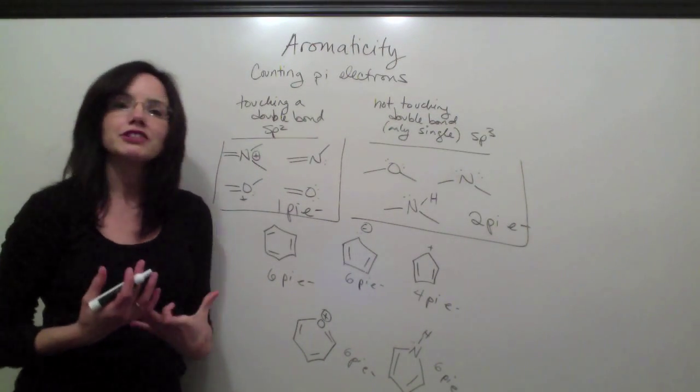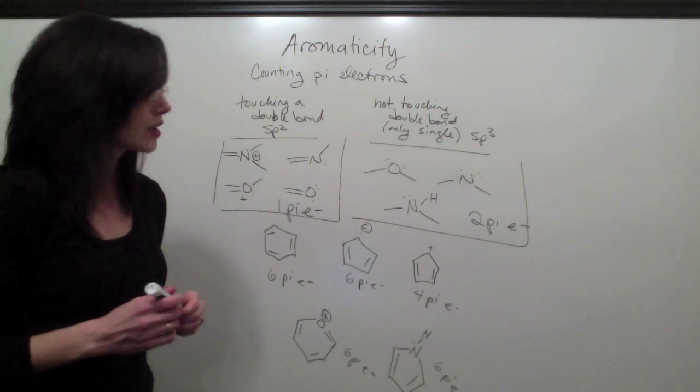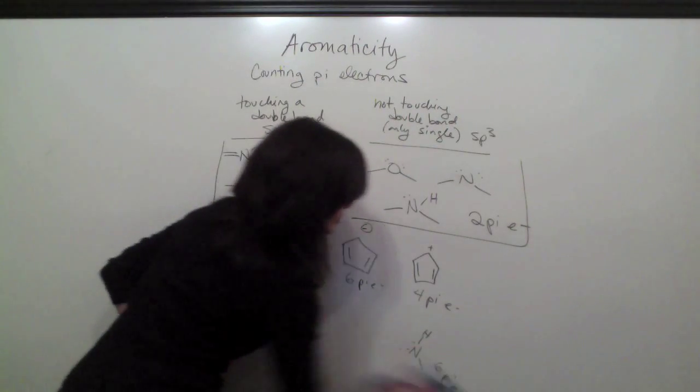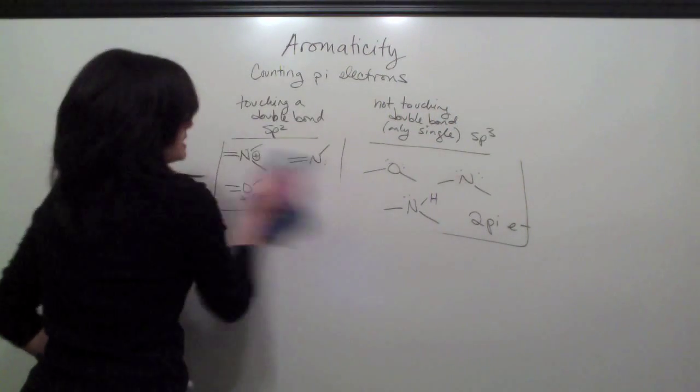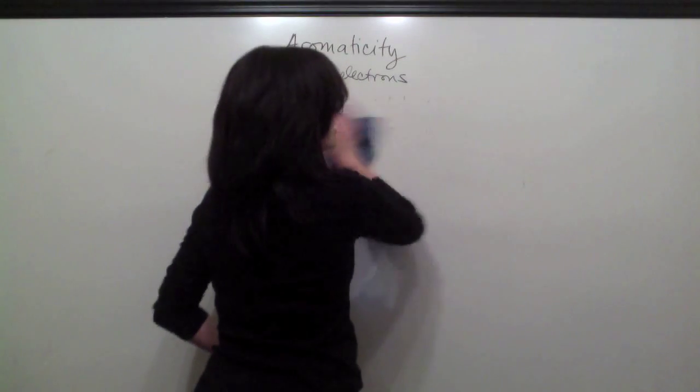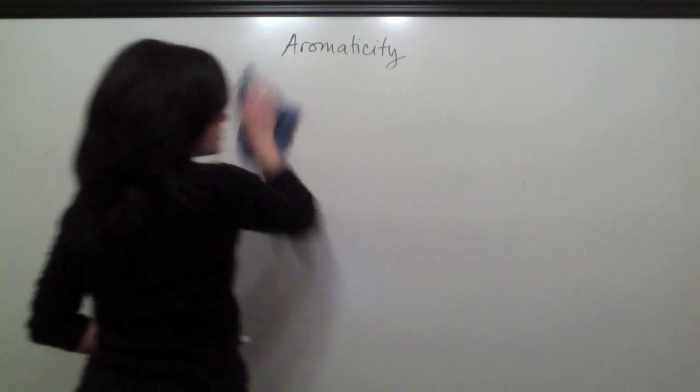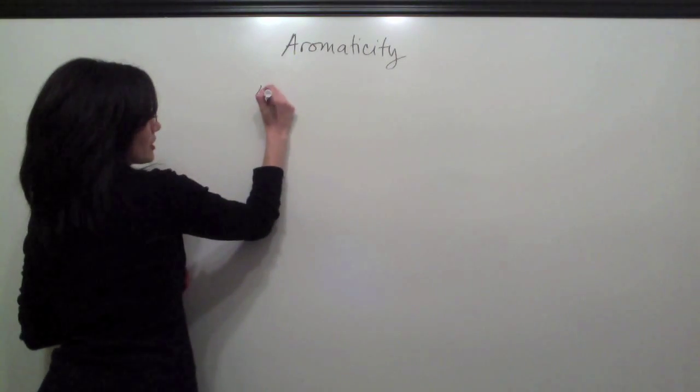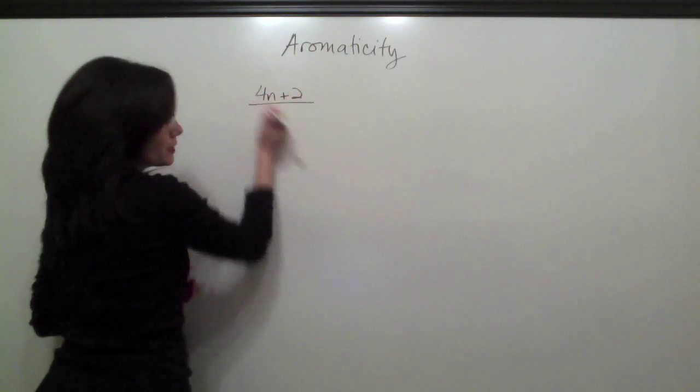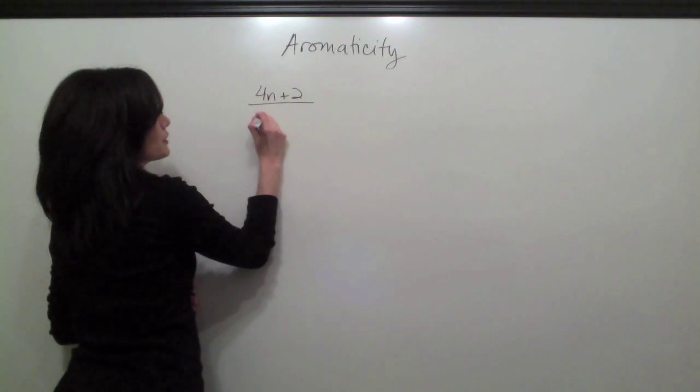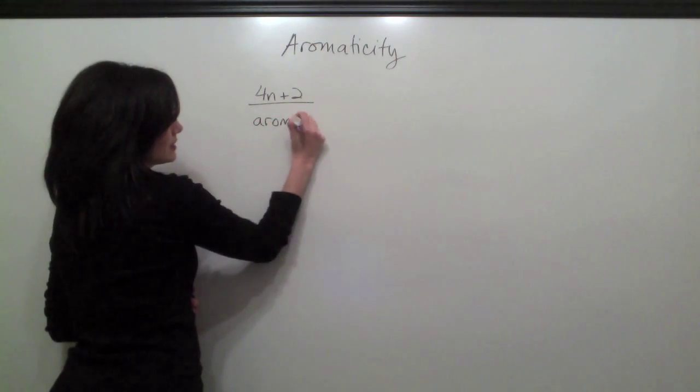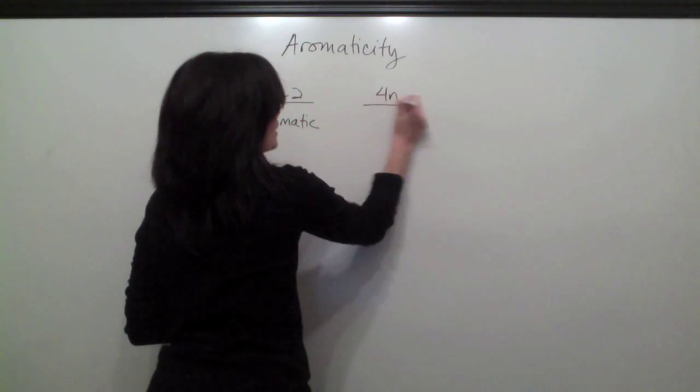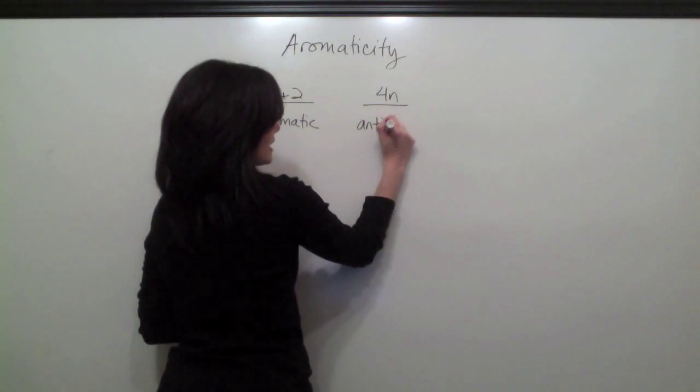So once we've counted our pi electrons, we're going to apply Huckel's rule. Now, your professor and your book probably told you to take your number of pi electrons and set it equal to 4n plus 2, or 4n. If you set your number of pi electrons equal to 4n plus 2, and you get an integer, that's going to tell you your compound is aromatic. And if you set your number of pi electrons equal to 4n, and you get an integer, that tells you your compound is anti-aromatic.